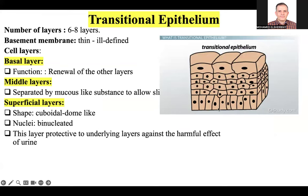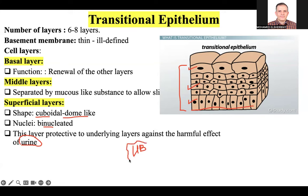Transitional epithelium: the basement membrane is thin and not clearly defined. The epithelium has about 6 layers. The basal layer is responsible for renewal. The middle layer has cells loosely connected with mucus to allow sliding. The top layer cells have a dome-like or cuboidal shape and contain two nuclei — binucleate cells. This is very important and is found in the urinary bladder and urinary tract for protection against urine and its harmful effects.